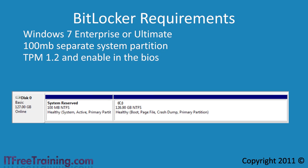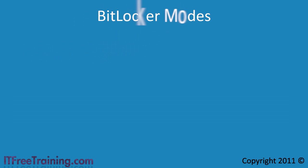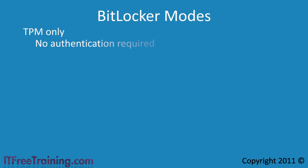Once you meet the requirements for BitLocker, you next need to decide what mode to run it in. The first mode is TPM only. When the computer starts up, a system check is performed, and if the computer is booting up the way it is expected, then the operating system will start. This means that if a person were to steal your computer, they could still boot the computer up without any user names or keys. Assuming a user name and password has been set in Windows, the thief will be stopped at the login screen.